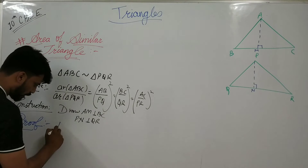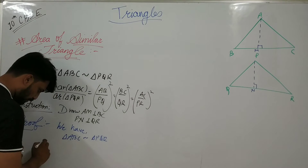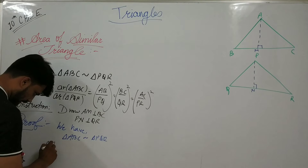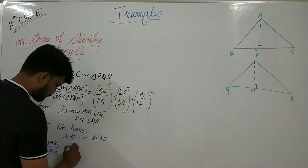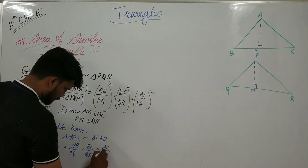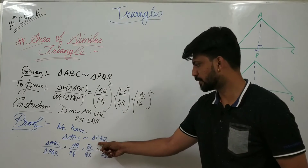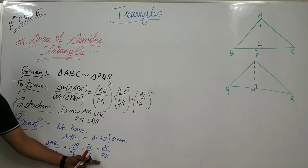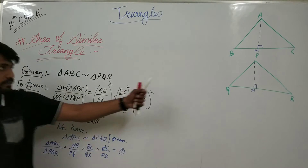We have triangle ABC similar to triangle PQR as given. Therefore I can write: AB/PQ = BC/QR = AC/PR. This is because when two triangles are similar, the ratio of their corresponding sides is equal. The reason is: Given. Mark this as Equation 1 because we will use it ahead.